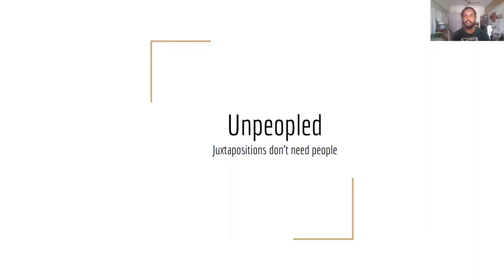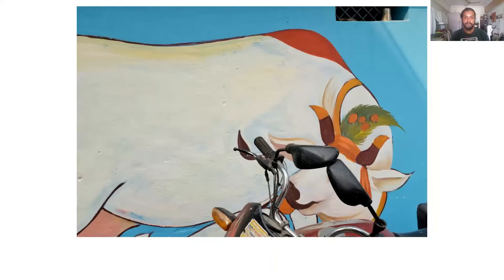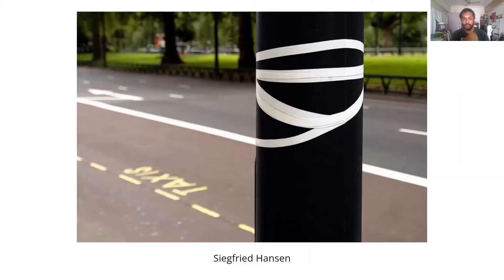Another thing to consider when taking juxtaposition shots is that you don't necessarily need people. You can connect different elements in a frame to create something magical even without people. I saw the painting on the wall and the motorcycle mirrors in front of it were positioned in just the right way to create cool-looking sunglasses for the cow. You can look at these elements and figure out ways to connect them. This beautiful shot by Siegfried Hansen requires a very clear vision on geometry and how to connect elements to create a beautiful pattern.